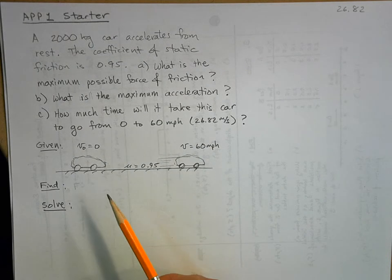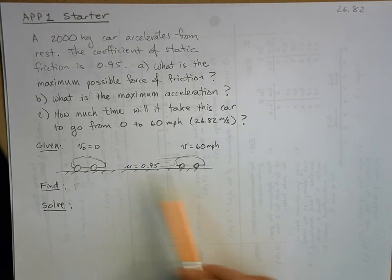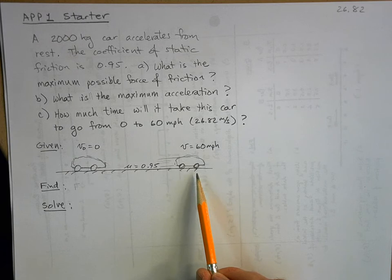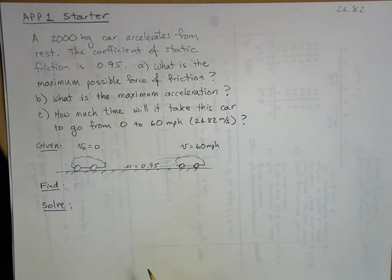So we've got a 2,000 kilogram car. It's accelerating from rest to 60 miles per hour. And we've got a coefficient of kinetic friction of 0.95.